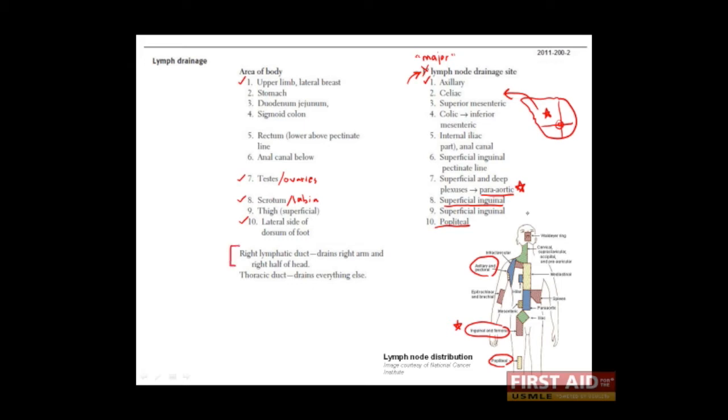The right lymphatic duct is the ultimate destination for the lymphatic vessels and nodes which drain the right arm and head. Of course, this is the right side.